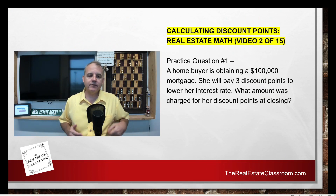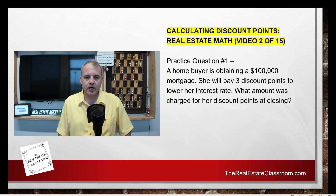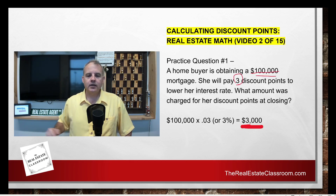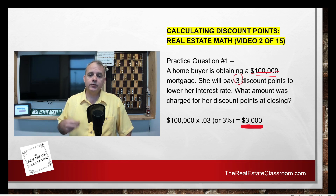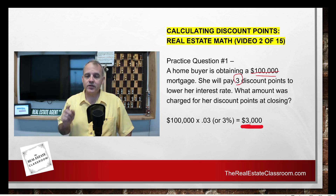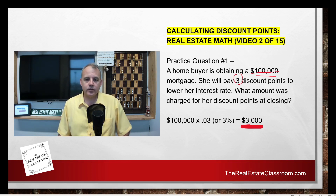Practice question number one — straightforward in its rawest form. A home buyer is obtaining a $100,000 mortgage. She will pay three discount points to lower her interest rate. What was the amount charged for her discount points at closing? The loan amount is $100,000 and she pays three discount points. One discount point equals 1% of the amount borrowed, so the formula is $100,000 times 0.03 — or 100,000 times 3 then hit the percent key. Either way, the final answer is $3,000.